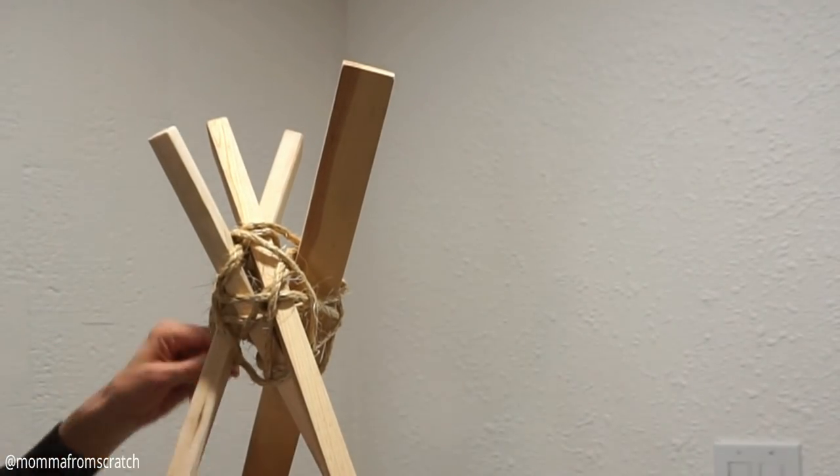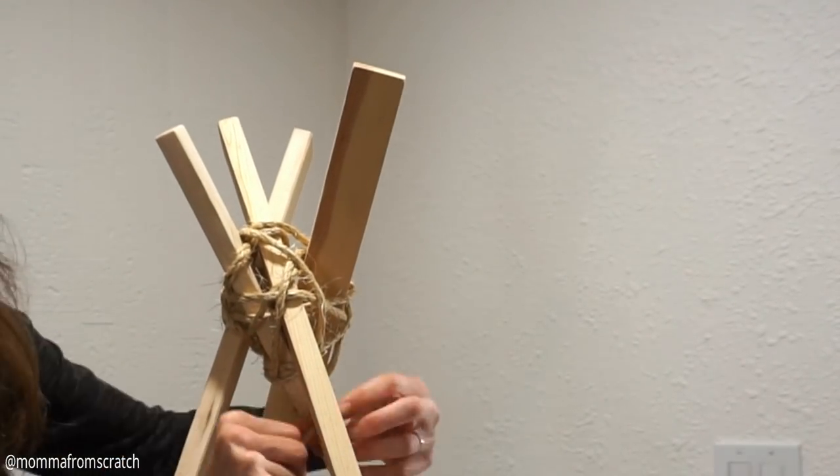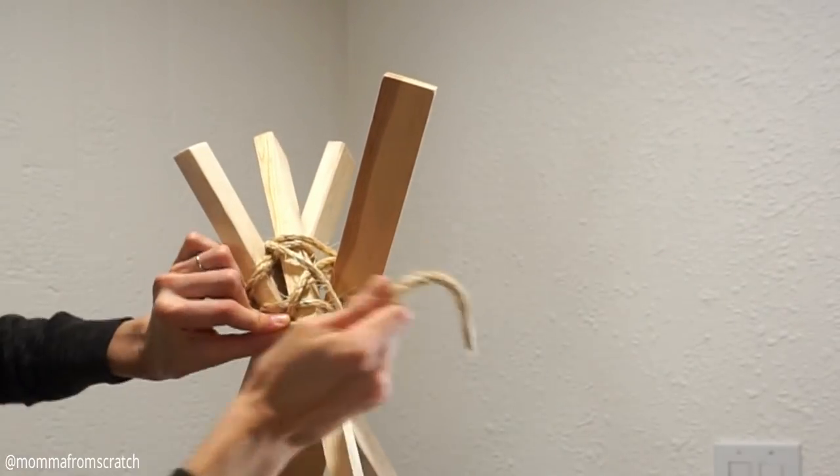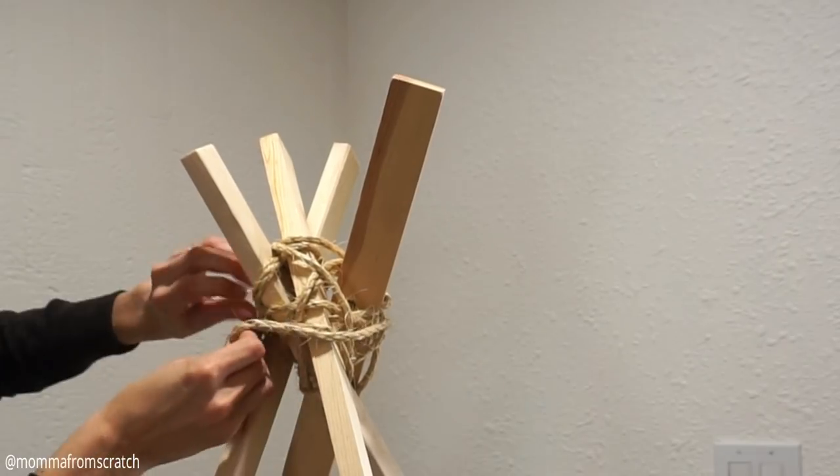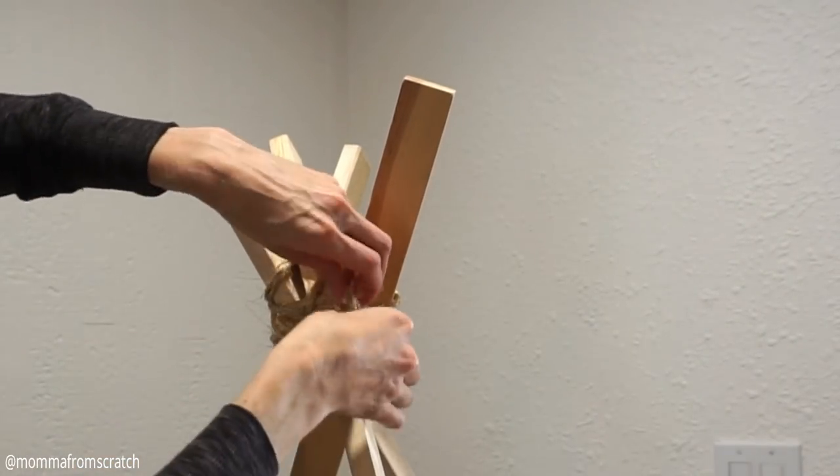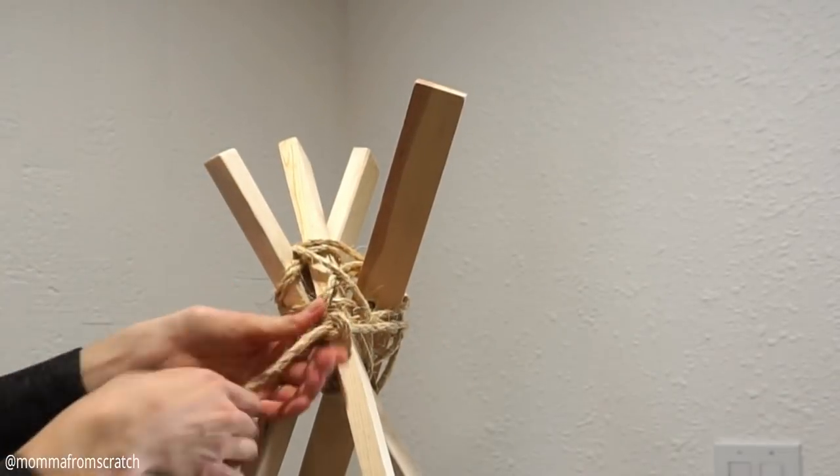Just make sure that you're doing individual boards at a time, and then when you get closer to the end, you can go ahead and wrap that all the way around. Then I just went ahead and cinched that and tied another knot here. Again, this is pretty easy to do, nothing too hard here.